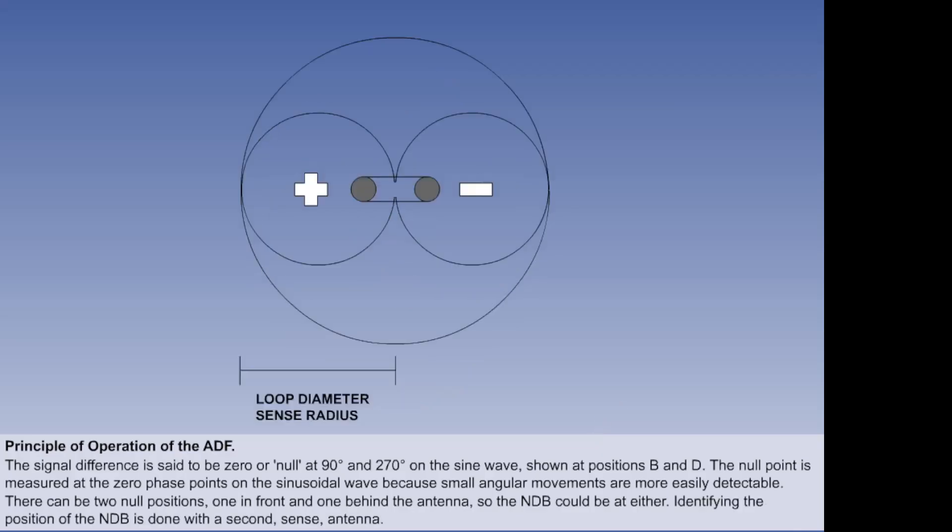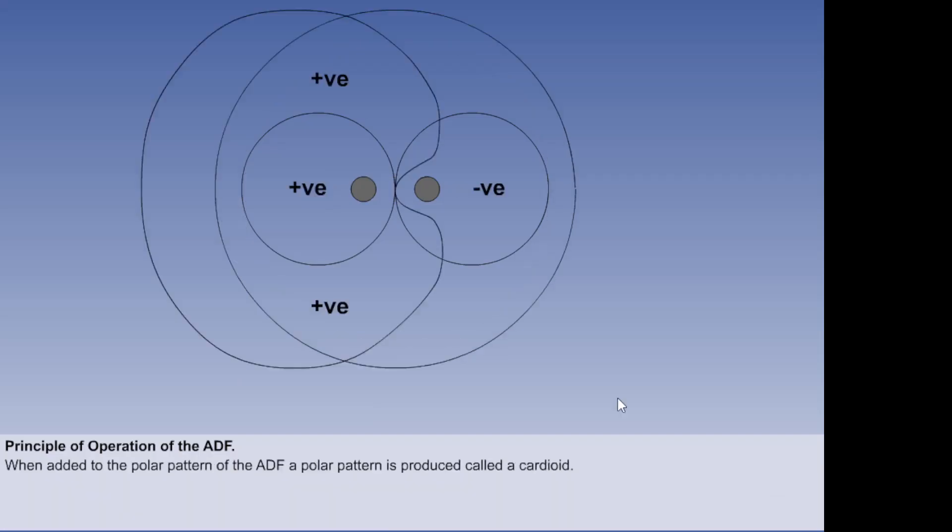The sense antenna is designed so that the received signal produces a current of the same strength as the maximum current in the loop antenna. Consequently, the radius of the polar diagram of this single pole antenna is equal to the diameter of each of the loop antenna circles. It is arranged for the field from the sense antenna to be in phase with one of the elements of the loop antenna.